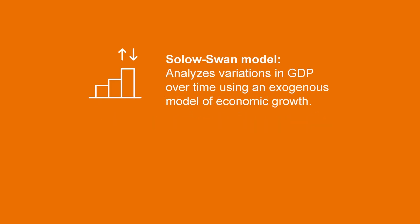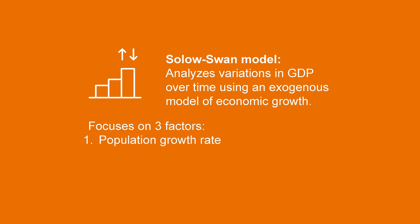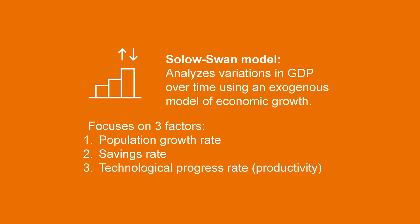The Solow-Swan model is the basic step towards this. This model is a first approach to analyze variables that affect economic growth, and as a consequence it analyzes variations in GDP over time. This model focuses on three factors: the population growth rate, which we have already seen; then the savings rate, which is based on the fact that what every household saves will eventually become an investment; and finally the technological progress rate — in other words, productivity.